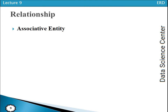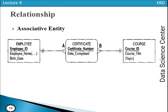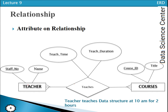Now we have the concept of an associative entity. An associative entity is an entity type that associates instances of one or more entity types and contains attributes that belong to the relationship between those entity types. When two entity types are associated and their relationship contains attributes, we refer to this as an associative entity.